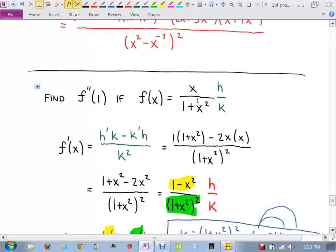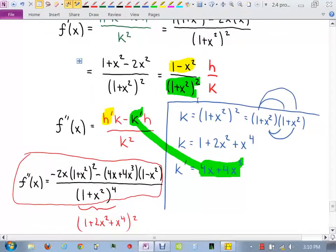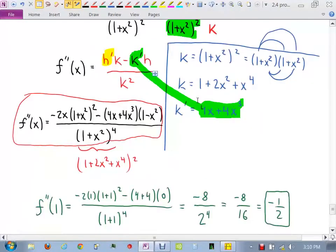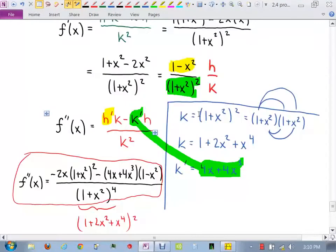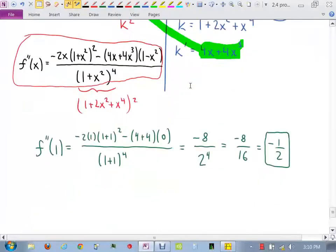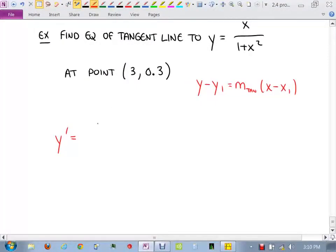We did x over 1 plus x squared, but we found the second derivative in the previous problem. For this problem, all we need is the first derivative, right? Which we had sitting right here. That was our first derivative. So I'm not going to show all that work again. Okay, there we go. So that's our derivative, right?